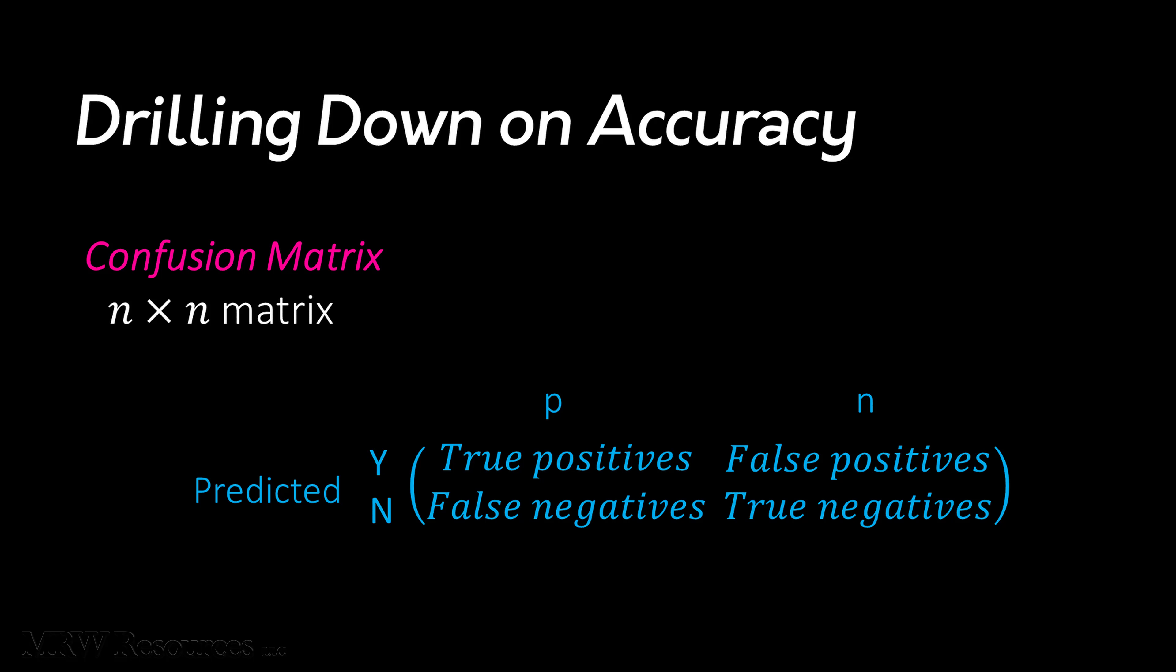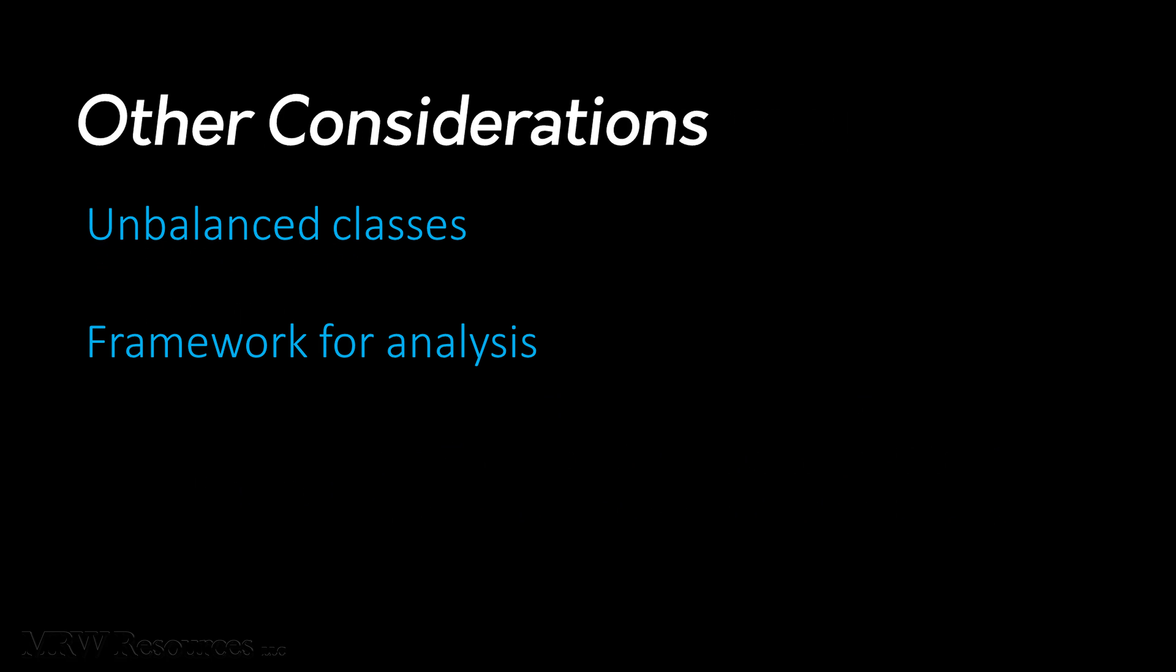What about our typical scenarios where the positive case of interest is quite rare? We call this unbalanced classes, and it raises a number of issues regarding how to build your model. Another consideration is this: if we don't use accuracy to evaluate our model, what other framework can we use? As it turns out, we can use an analytical framework we're already familiar with. We'll get into that in more detail in upcoming videos. As always, we should keep baseline performance in the back of our minds as we move forward with our analysis.